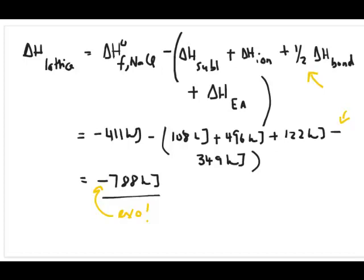So, in other words, to break a sodium chloride bond, you're going to need to input 788 kilojoules of energy to do this.